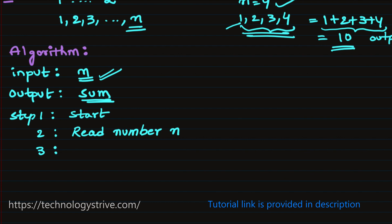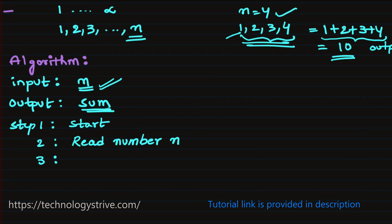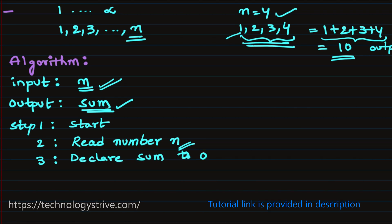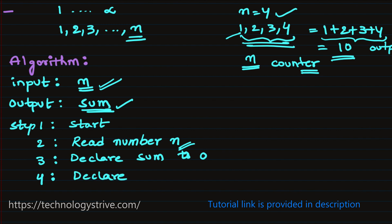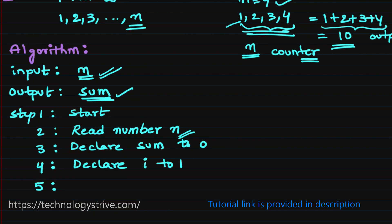Step 3: declare a variable sum, initialized to 0, which will hold the result of adding the first N natural numbers. Step 4: we also need a counter variable to track whether we have reached N. Declare counter variable i and set it to 1.